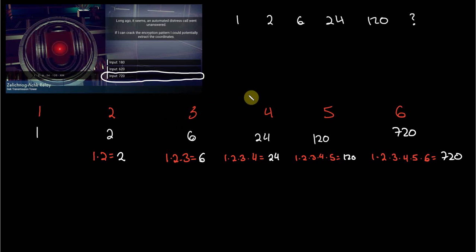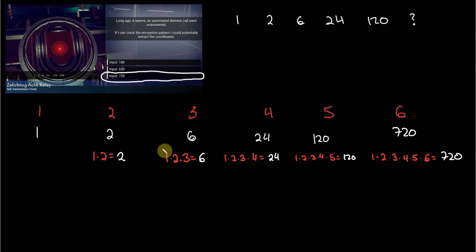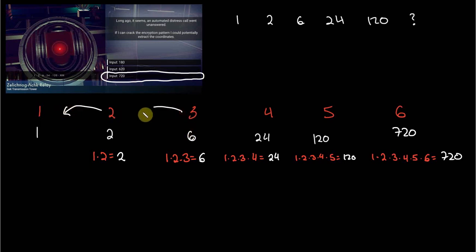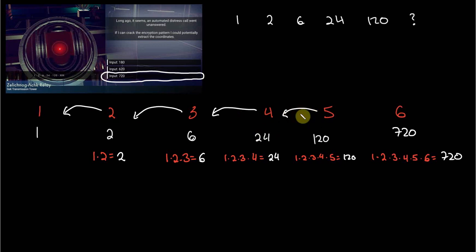They would input 720 into the terminal, decrypt the so-called encryption pattern, and extract the valuable information. But in order to approach it this way, the person would have had to ignore the first term. Let's think about it: the second term equals 2 because it's 2 times 1; the third term is 6 because it's 3 times 2 times 1; the fourth term is 24 because it's 4 times 3 times 2 times 1; and likewise for the fifth and sixth terms.